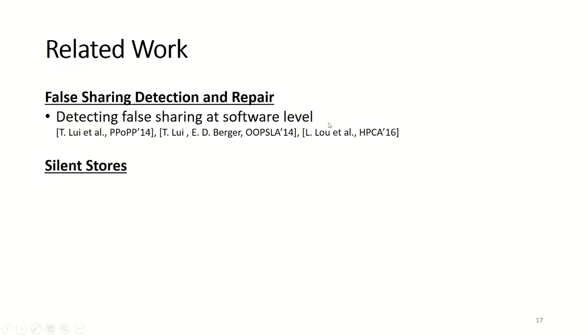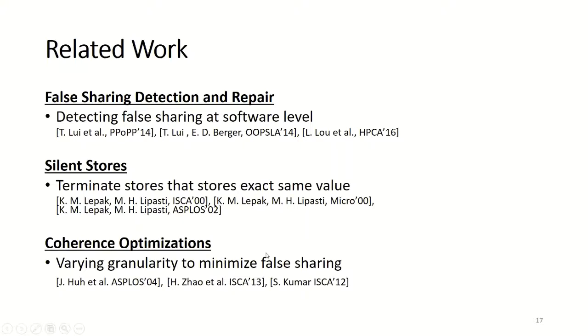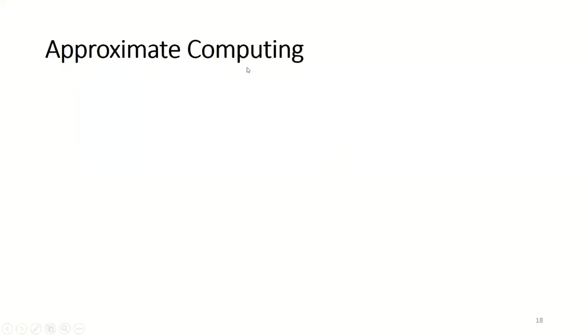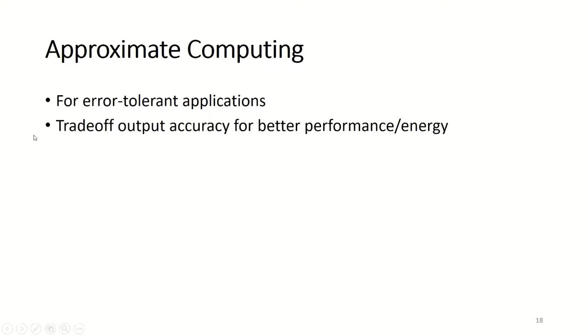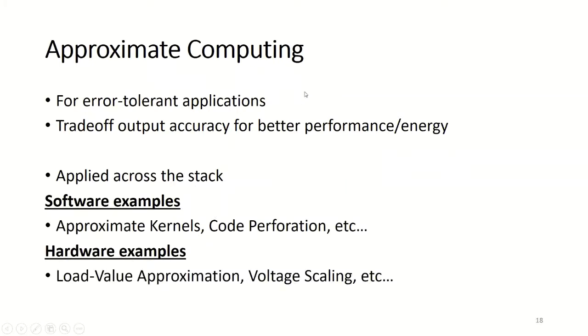Prior work has tried to minimize coherence misses in various ways. On the software side, there's false sharing detection and repair. On the hardware side, there's silent stores and various coherence optimizations. For our work, we try to apply approximate computing to cache coherence. Approximate computing is for error-tolerant applications where we trade off output accuracy for better performance and energy. These approximate computing techniques can be applied across the stack from software to hardware, or as co-design as well.